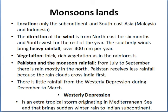The last region is monsoon land, present in the subcontinent and Southeast Asia, which includes Malaysia and Indonesia. The direction of the wind is from the northeast for six months and from the southwest for the rest of the year. The southerly winds bring heavy rainfall of over 400 millimeters per year. Vegetation is thick and rich, as in the rainforest. In Pakistan, we have monsoon rainfall from July to September, mostly in the north. Pakistan receives less rain because the rain clouds cross India first. There is also a little rain from westerly depressions during December to March — these are extra-tropical storms originating in the Mediterranean Sea that bring southern winter rain to the Indian subcontinent.